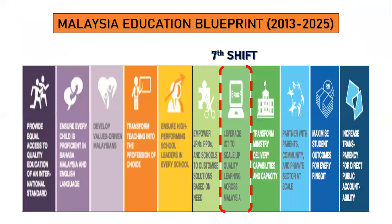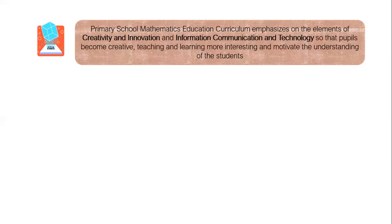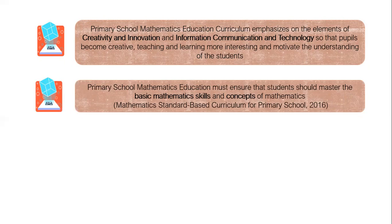First of all, we are looking at the introduction. The Malaysia Education Blueprint 2013 to 2025 has been developed with 11 shifts in transformation of education. We are focusing on the 7th shift, which is to leverage ICT to scale up quality learning across Malaysia. The Primary School Mathematics Education Curriculum emphasizes elements of creativity, innovation, and information communication technology so that pupils become creative, making teaching and learning more interesting and motivating student understanding. Primary School Mathematics Education must also ensure that students master basic mathematics skills and concepts based on the Mathematics Standard Based Curriculum for Primary School 2016, known as the KSSR.